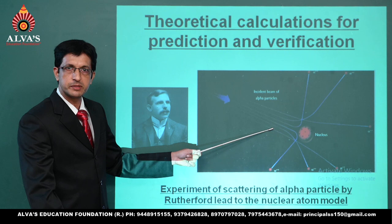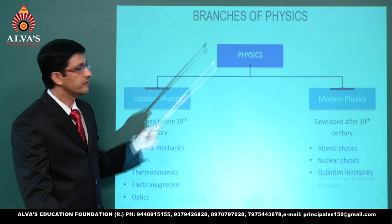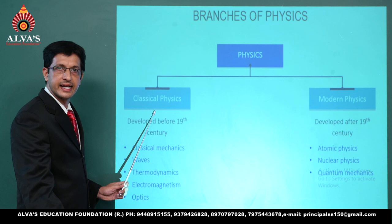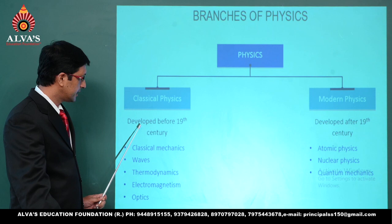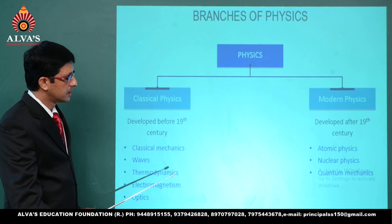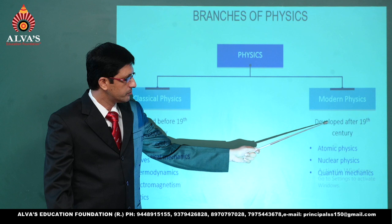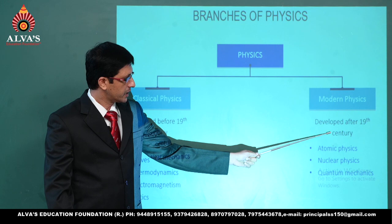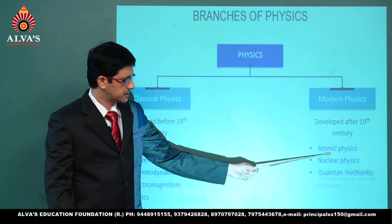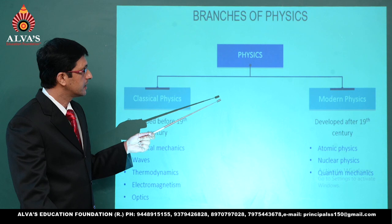It may be in your first PUC or second PUC. Let us now see the branches of physics. On one side we have classical physics, which means the branch developed before the 19th century — namely classical mechanics, waves, thermodynamics, electromagnetism, and optics. The second classification is modern physics, developed after the 19th century, which includes atomic physics, nuclear physics, and quantum mechanics. Let us look at each of these in a little detail.